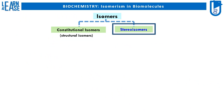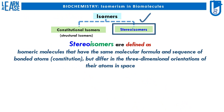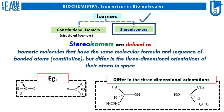Stereoisomers are defined as isomeric molecules that have the same molecular formula and sequence of bonded atoms — that is, constitution — but differ in the three-dimensional orientations of their atoms in space. Different theoretical examples of stereoisomers are shown in the image, where the structure of molecules in each example is the same but they differ in three-dimensional orientations.